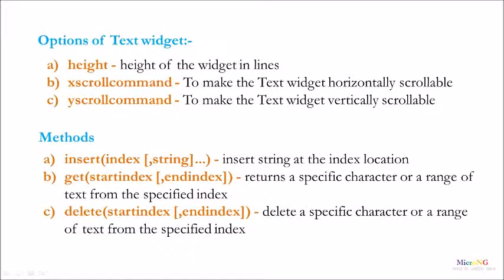If only the first parameter is mentioned, it will return a specific character. If both the starting and ending index are mentioned, it will return the range of text from the specified index. The third method is delete. Similar to get, the delete method also takes two parameters: the start and end index. It deletes a specific character or range of text from the specified index.